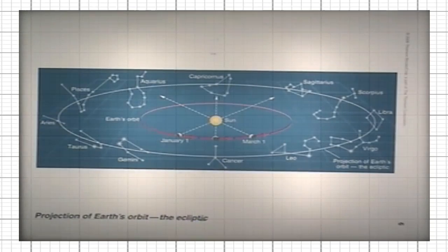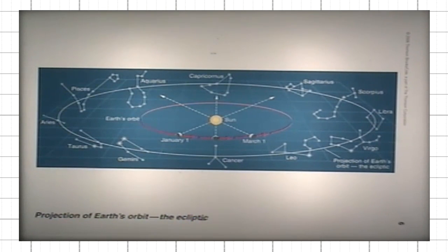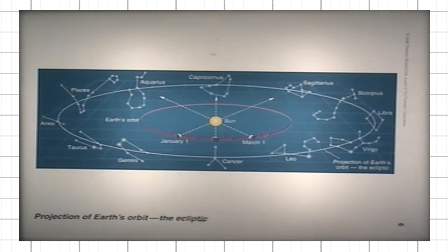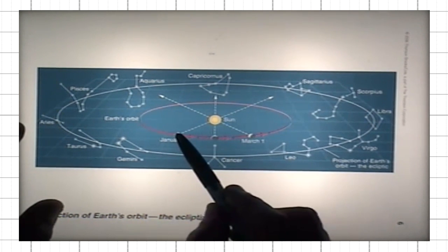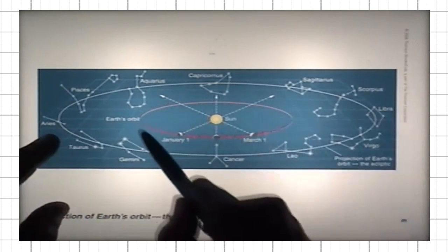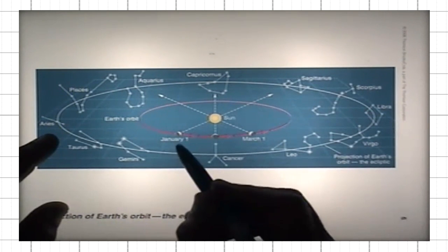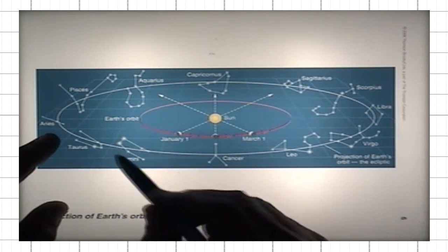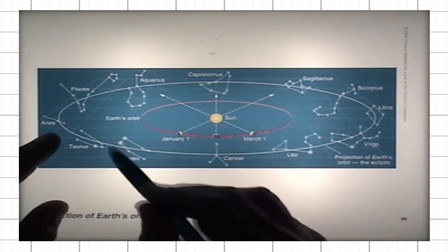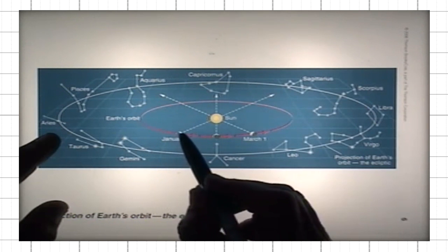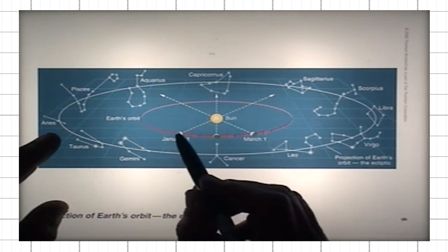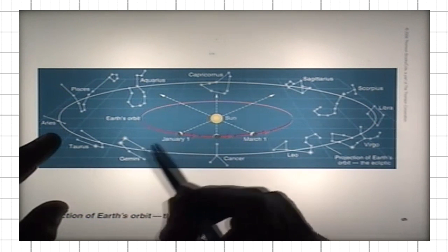I want to show you this diagram. Basically, it illustrates what I mean by the annual motion of stars related to the Earth's revolution around the Sun. For instance, at the beginning of the year, January 1, the constellation that is overhead in the midnight sky on this side of the Earth that is not illuminated by the Sun would be Gemini.